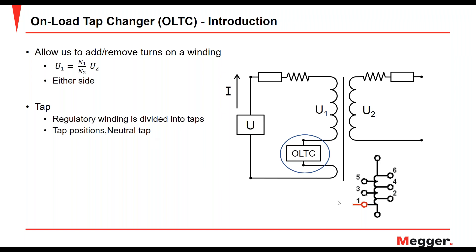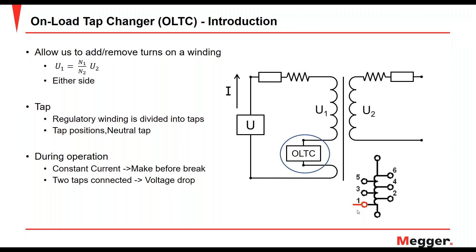In the middle of the OLTC, you have the neutral tap, and you can go up or down to add or subtract turns. During operation, the current must always be constant. If we want to go from tap 1 to tap 2, current must be continuous throughout this operation - the make-before-break principle. This means both taps need to be connected before leaving tap 1. Since there's a voltage difference between taps, connecting them creates a circulated current, requiring transition impedances to limit it.